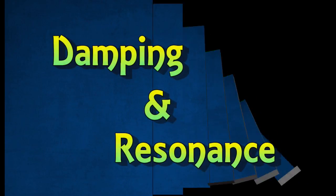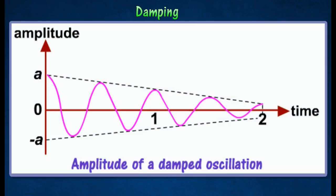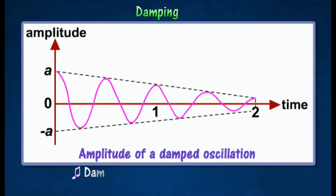Damping and Resonance. Damping is a process where oscillations die down due to lost energy. Damping causes the amplitude of oscillation to gradually decrease and finally become zero when oscillation stops.